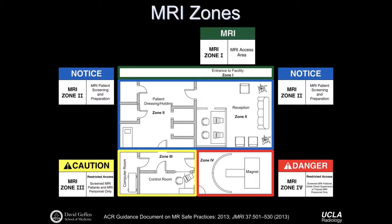The American College of Radiology defines different MRI zones. Zone 1 is general MRI access, the entrance to the facility. Zone 2 is where MRI patient screening and preparation occur, typically a waiting room or reception area. Zone 3 is restricted to screened MRI patients and MRI personnel only—the control area adjacent to the MR system. Zone 4 is for screened MR patients only, under direct supervision of trained MR personnel. Understanding these boundaries is critical to maintaining patient and personnel safety.